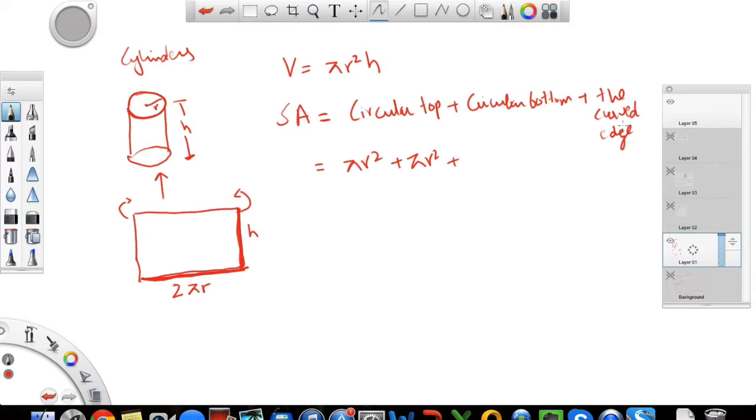Now the top and bottom are circles and the area of a circle is just pi r square. Right? So that's simple. Now what about the edge curve, the curved edge? So this is basically the circular piece. If it's the can, this is the area that you hold in your hands, to hold the can.